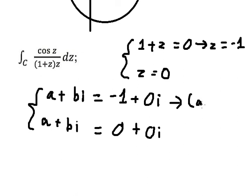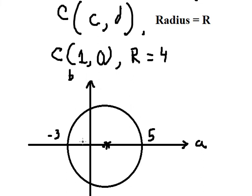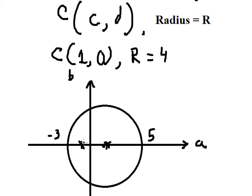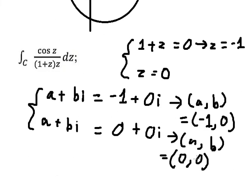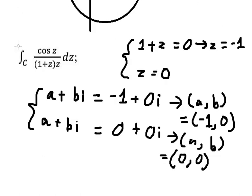So that means for the first pole (a, b) equals (negative one, zero), and for the second pole (a, b) equals (zero, zero). Now we need to find which ones are inside the circle and which are outside. a equals negative one is here, b equals zero is here, so that pole is inside. The second one, zero zero, is also inside the circle. So both poles are inside the circle.